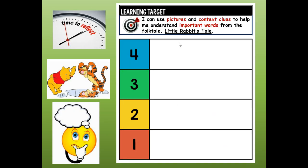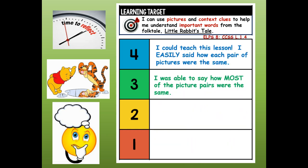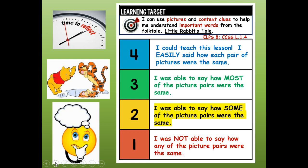Now we're going to reflect. Here was our learning target — time to reflect. How did you do today? I can use pictures and context clues to help me understand important words from the folktale Little Rabbit's Tale. Four: I could easily say how each pair of pictures were the same. Three: I was able to say how most of the picture pairs were the same. Two: I was able to say how some of the picture pairs were the same. Or one: I was not able to say how any of the picture pairs were the same. How do you think you did today — four, three, two, or one?